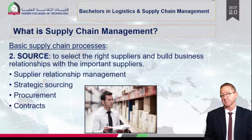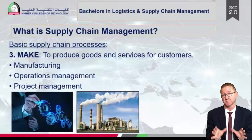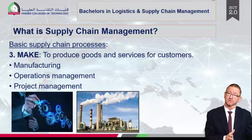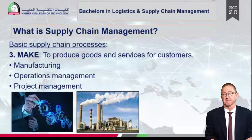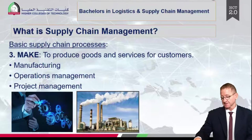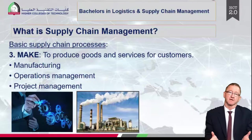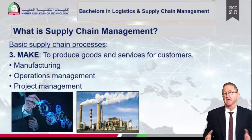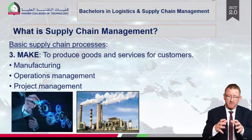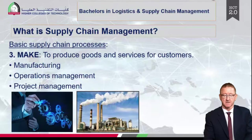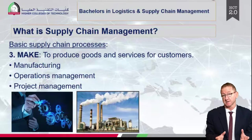The third supply chain process is make — physically manufacturing or producing the product. In this course we cover location and capacity. Location is very important: a retail outlet must be close to customers, otherwise the company has a disadvantage. Capacity simply means how big must the factory be, how many machines will we use, which equipment, and what is the output per hour. These are very important decisions as part of the make process.